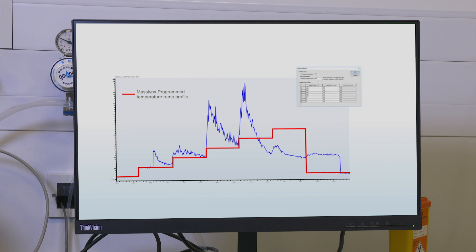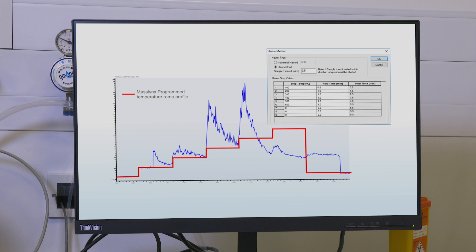To assist method development with radian ASAP, the software has a temperature ramp feature which allows the user to run samples over an increasing temperature range to assess which temperature conditions give optimal response for components contained within the sample.